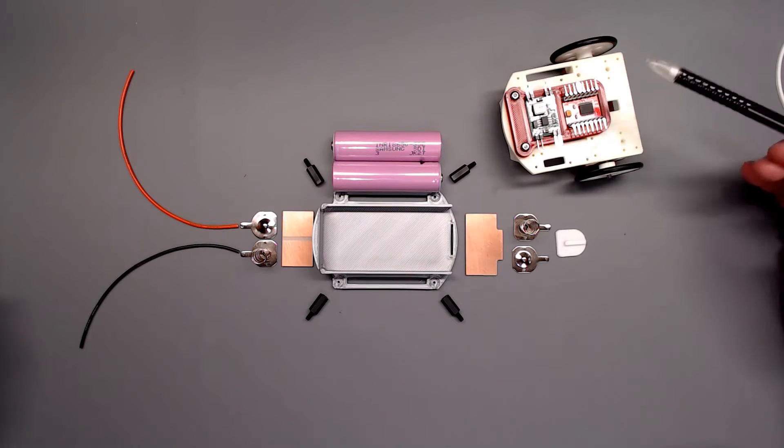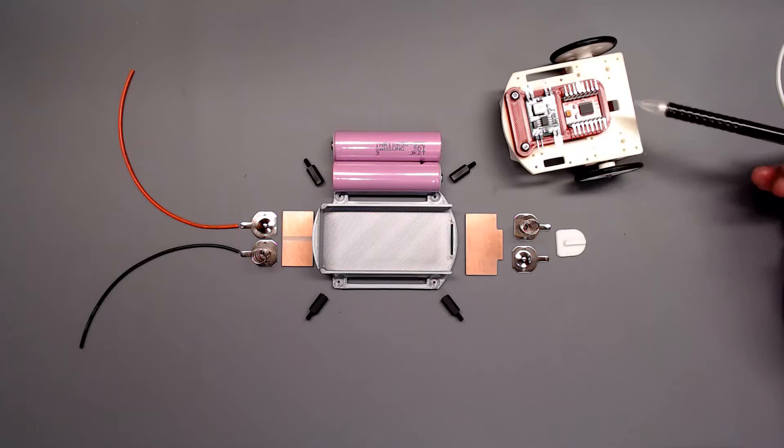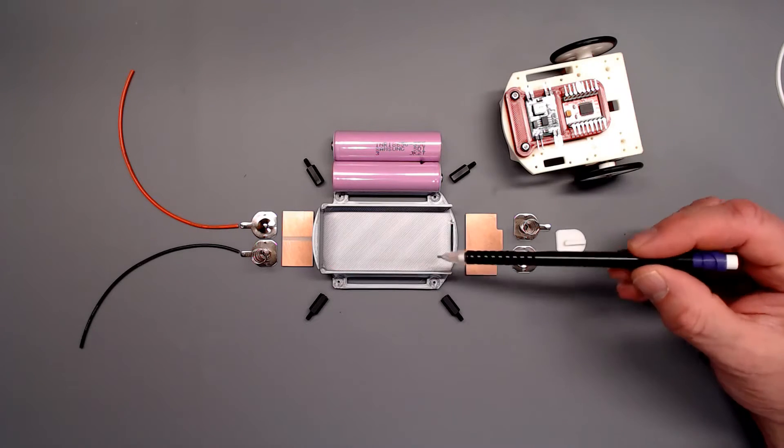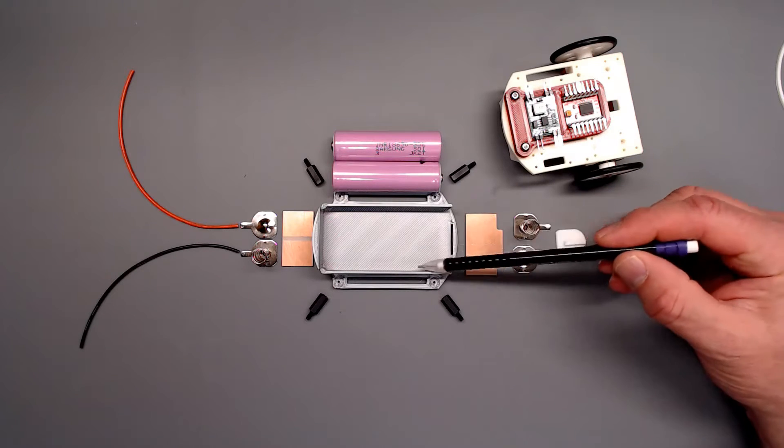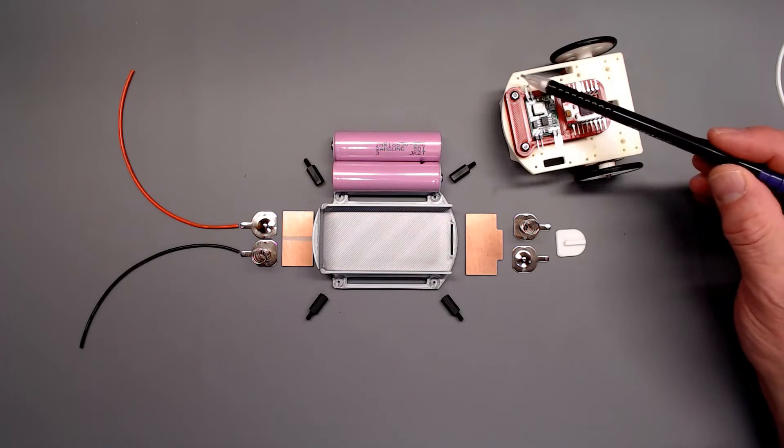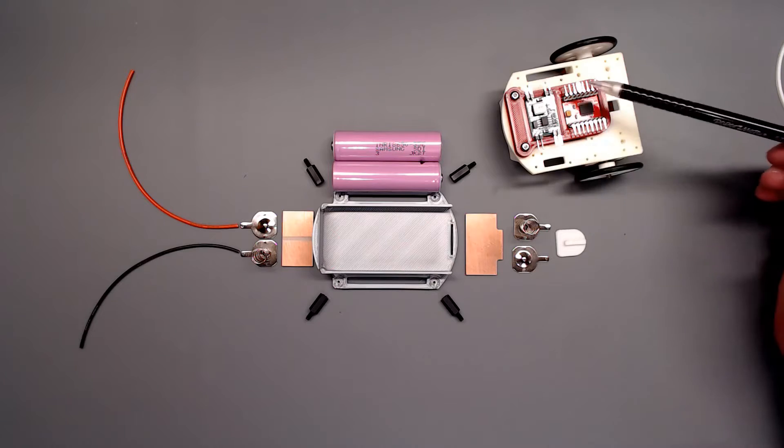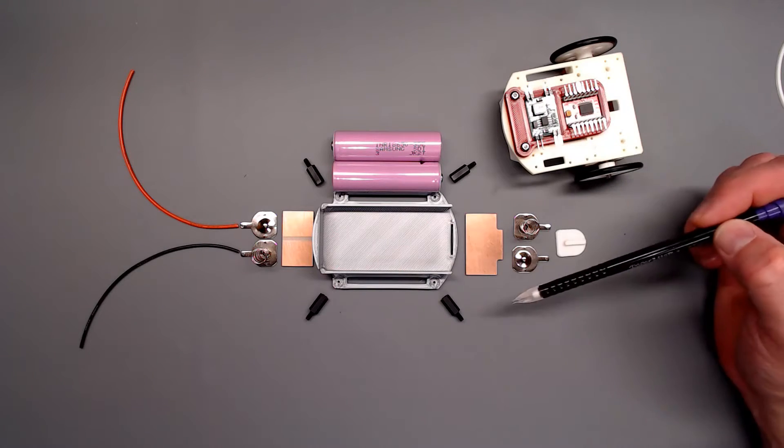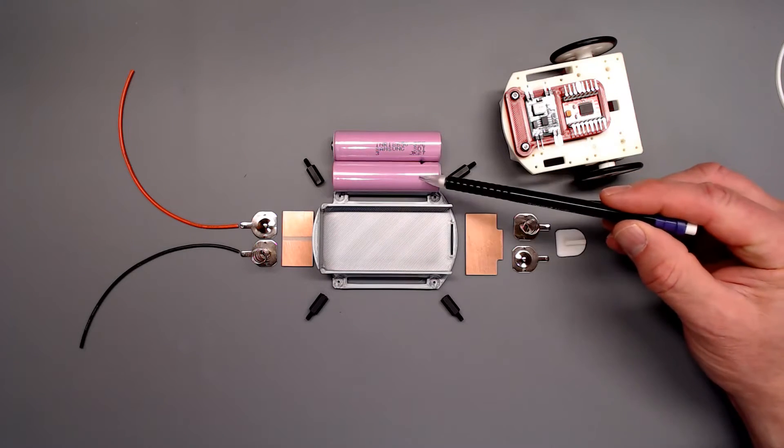Over here on the workbench, this is our Zumi as it currently exists, and we're working on the battery deck. That would be this component here, which will mount on standoffs in the four corners. That'll lift it up above this area. We've got our two 18650 cells.